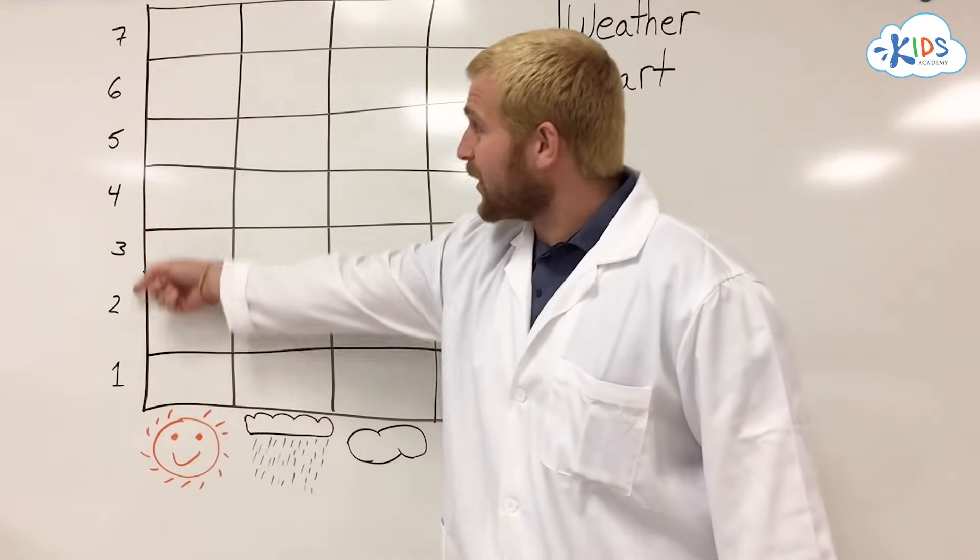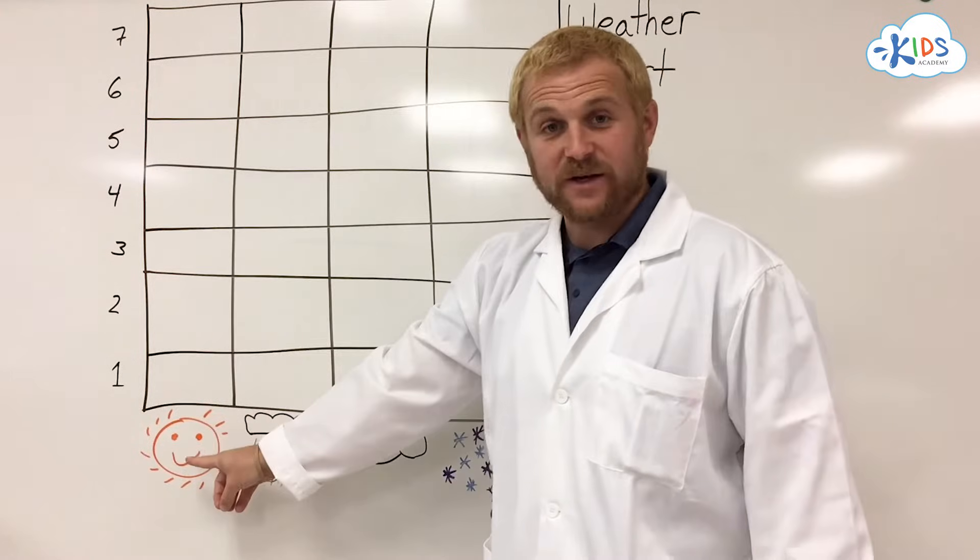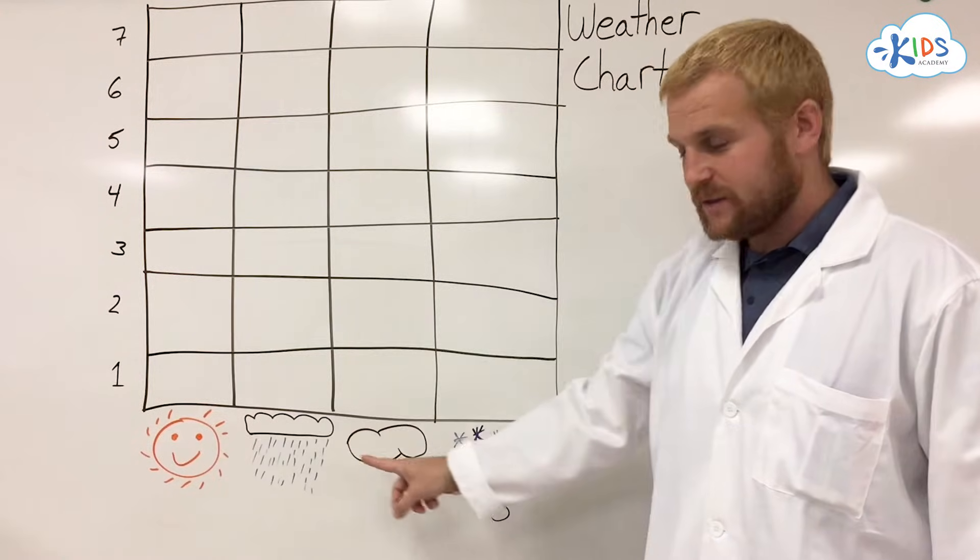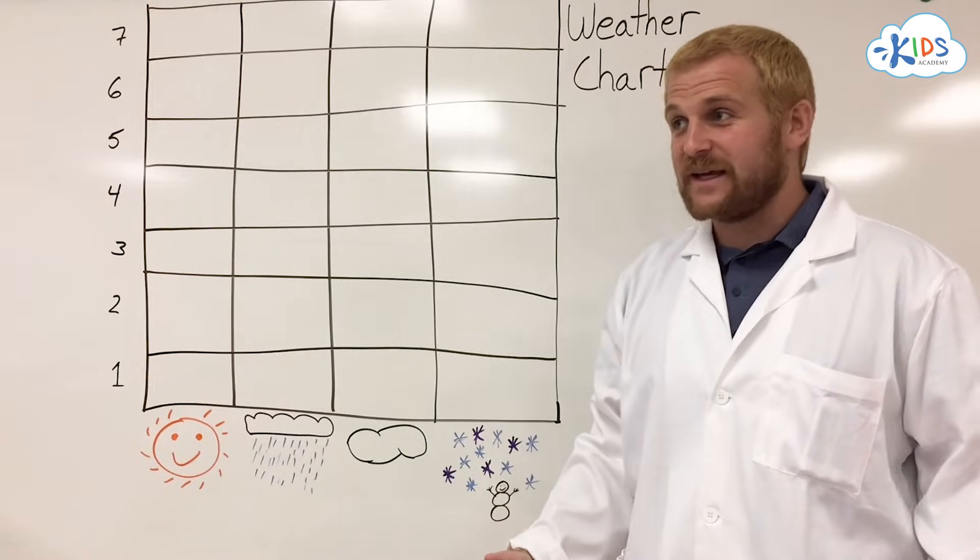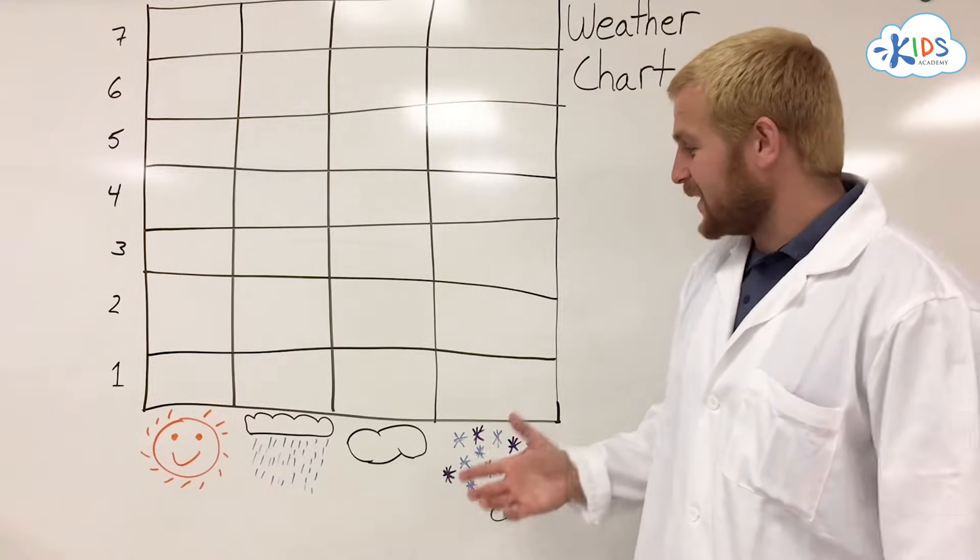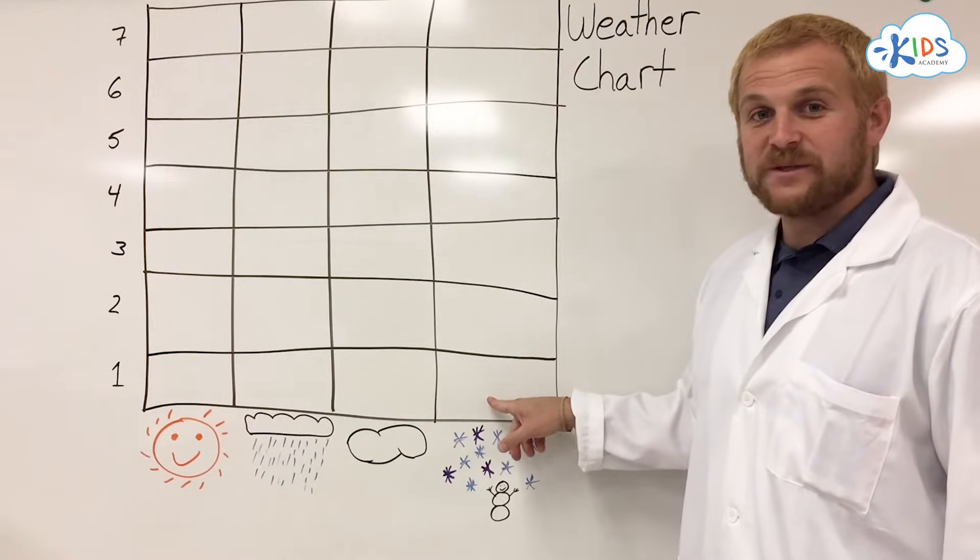And then over here we have numbers going up the side. That tells us how many days it was either sunny, rainy, cloudy, or snowy. What we'll do over the next couple of days is look outside and decide which one we want to mark as, and then color in one box to represent each day.